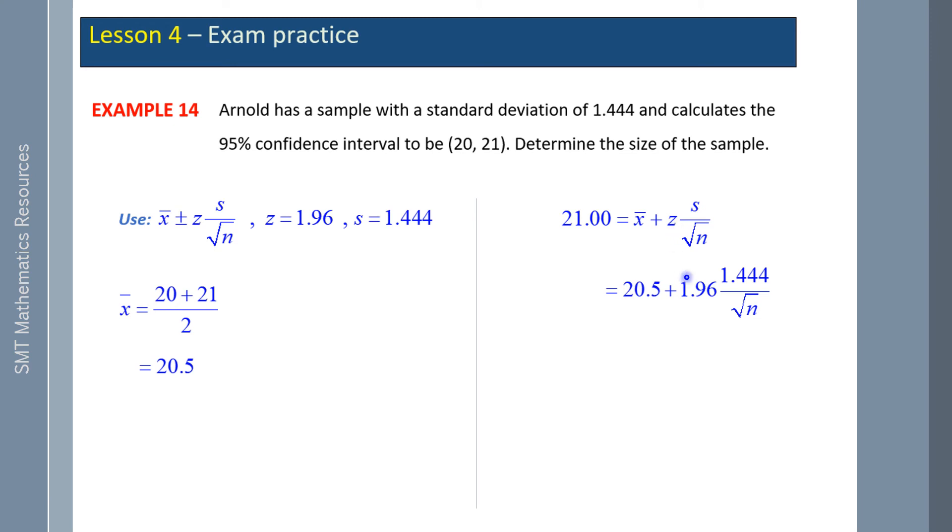Now if I subtract 20.5 from both sides, then if I rearrange this equation where I make the square root of n equal 1.96 times 1.44 divided by 0.5, square both sides, I get 32.04 as the sample size.